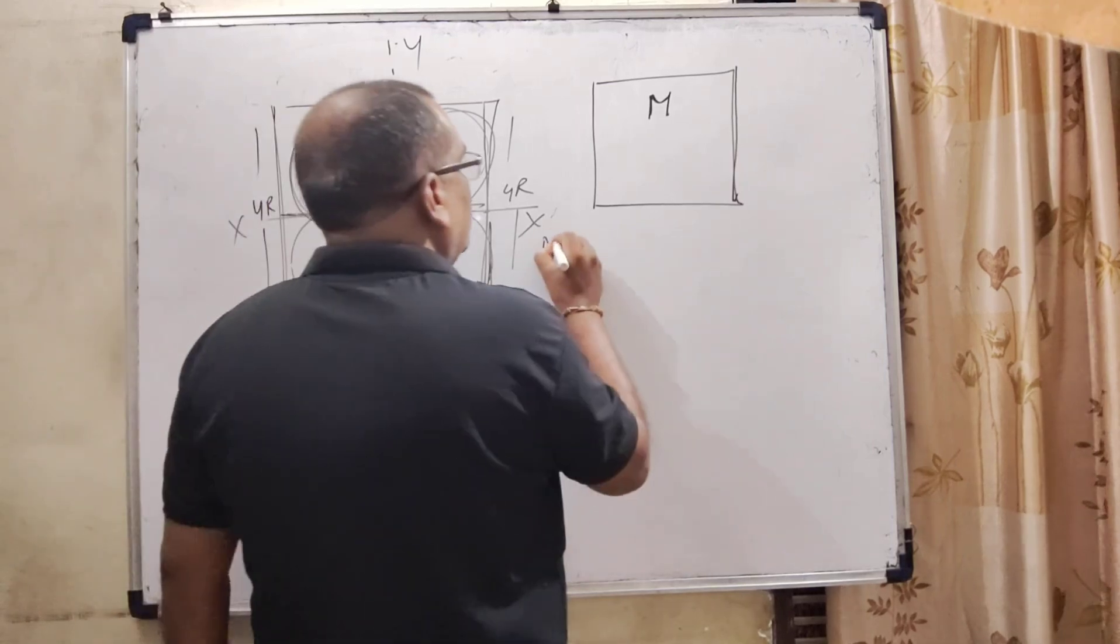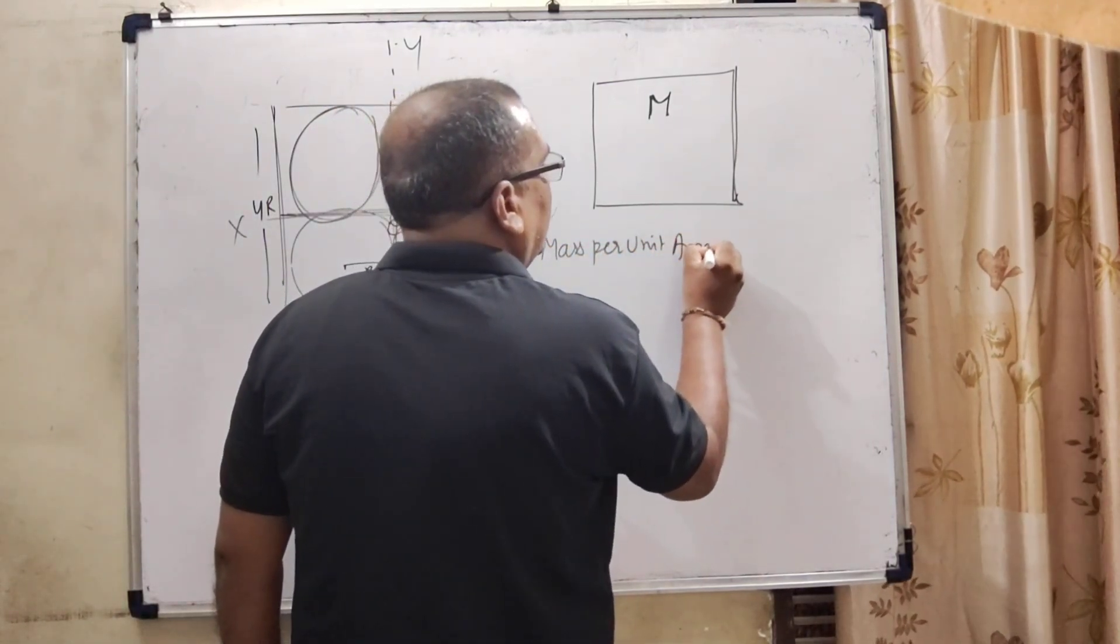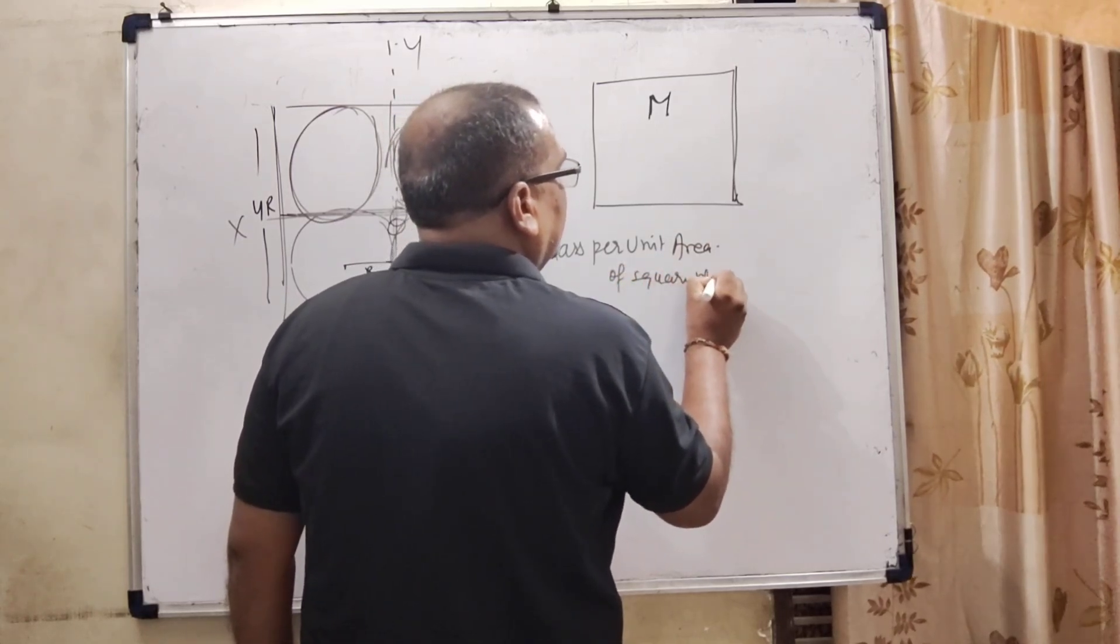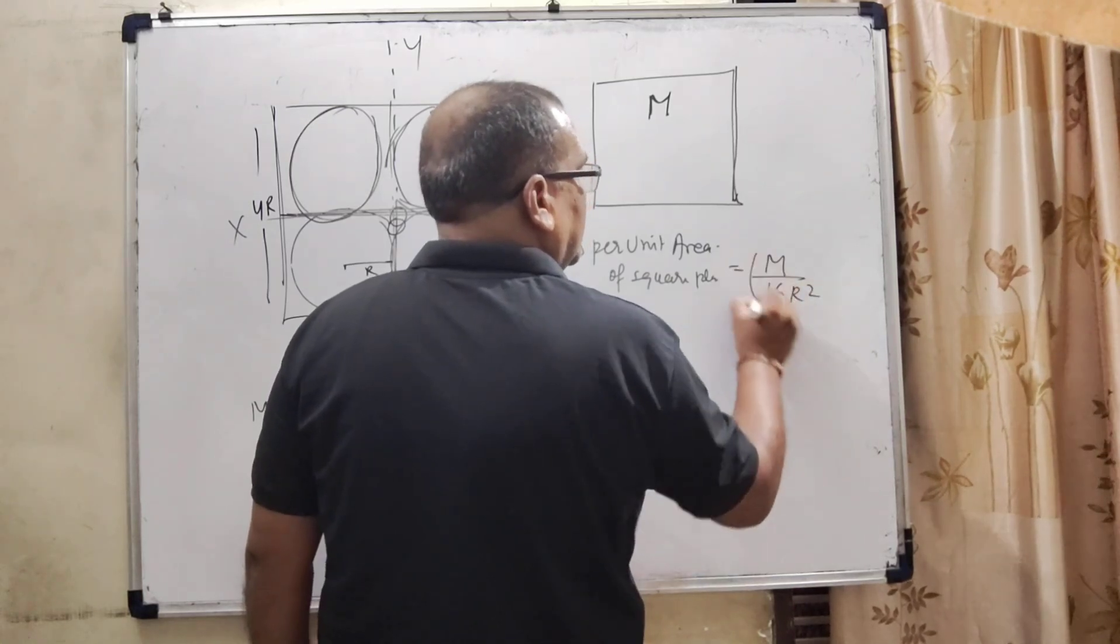Mass per unit area of square plate is capital M by 16R square.